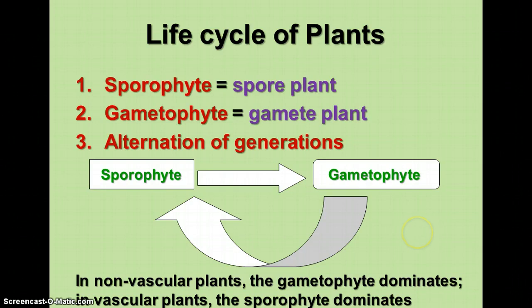The sporophyte is the spore plant — the plant that produces spores, which are haploid cells that can grow into multicellular individuals. The gametophyte is the gamete plant; it produces the gametes that can bind to make an embryo that is diploid and can grow into a multicellular individual.